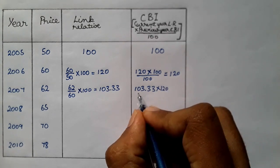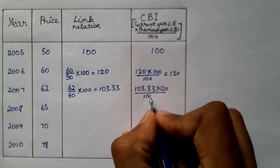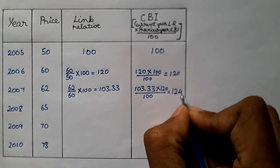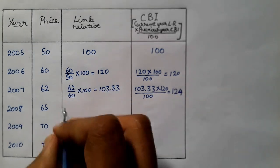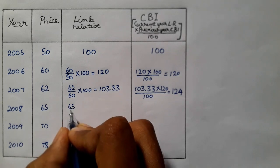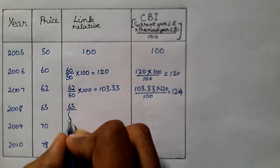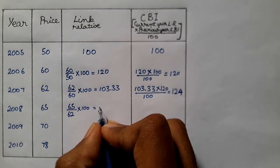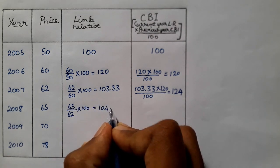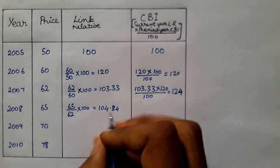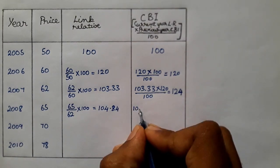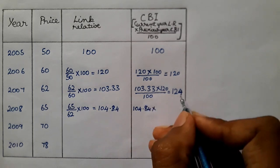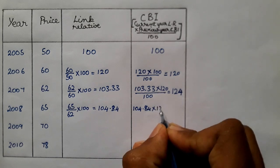We have 65, so 65 divided by previous is 62 into 100. If we solve this is 104.84. Now the answer is 104.84 into this previous answer is 124, so 124 divided by 100. If we solve this is 130.